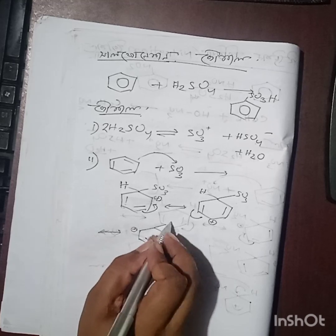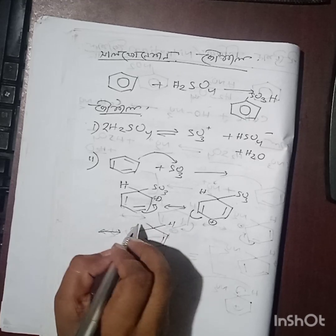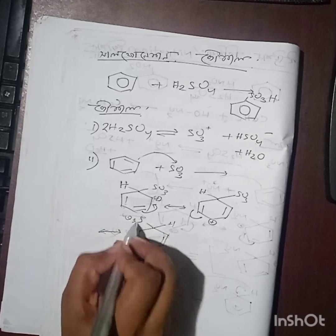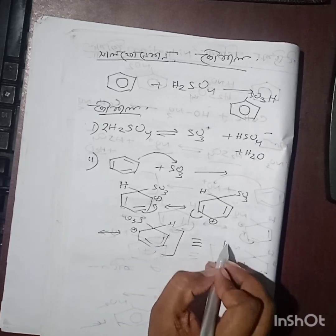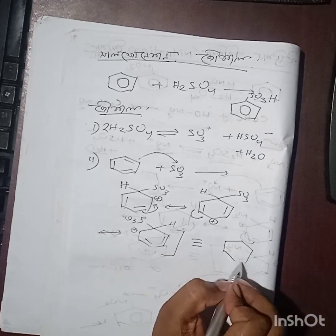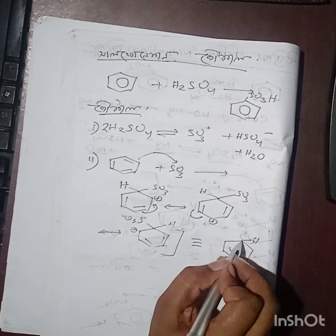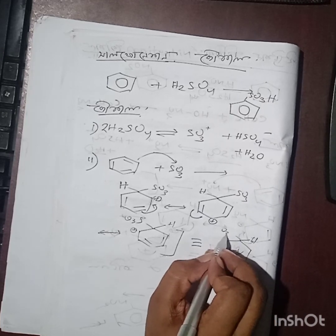The positive charge moves to different positions - ortho and meta. The sigma bond breaks to reform the pi bond, and resonance delocalizes the positive charge.